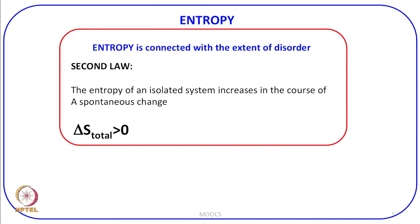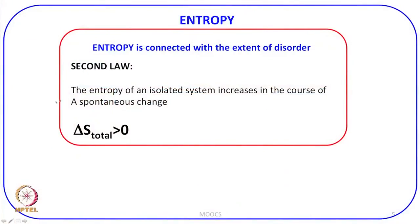We have connected the direction of spontaneous change with generating more disorder. Entropy is connected with the extent of disorder. If in a system there is a large amount of disorder, its entropy is more; as order increases, entropy decreases. This leads to another definition of the second law of thermodynamics: the entropy of an isolated system increases in the course of a spontaneous change. When we talk about an isolated system here, we mean a global isolated system — the system plus its immediate surroundings. In mathematical form: ΔS_total > 0 for a spontaneous change.